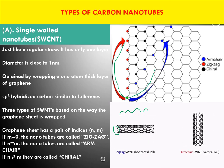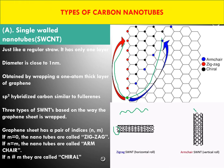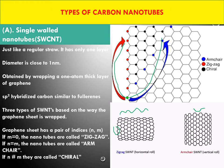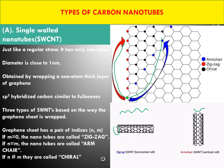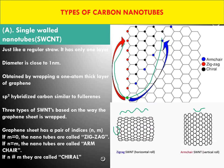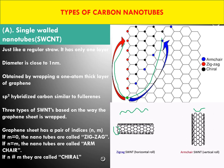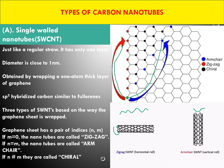If you connect one carbon to another in a different direction, it will give an armchair-like structure. By using different wrapping methods, you can produce different types of single-wall carbon nanotubes. The important thing is that the diameter of the tube is below one nanometer.